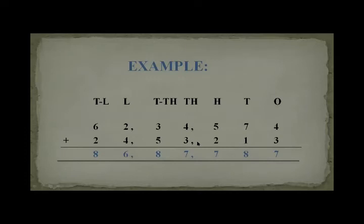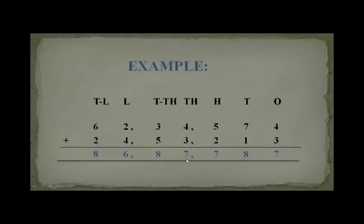Another example is also done for your better understanding with place values shown: ones, tens, hundreds, thousands, ten-thousands, lacs, and ten-lacs — a 7-digit addition. Starting from the right: 4 plus 3 equals 7; 7 plus 1 equals 8; 5 plus 2 equals 7; 4 plus 3 equals 7; then 5, 6, 7, 8; 2 plus 4 equals 6; and 6 plus 2 equals 8. So the sum is 86 lacs, 87,787. These two are addends and this is the sum.